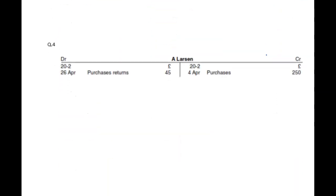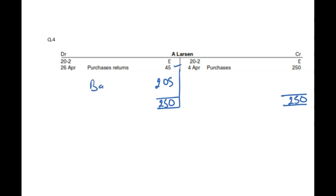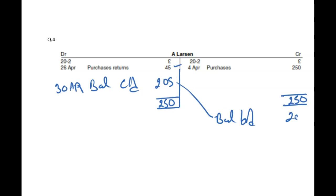The final one — A Larson. It looks like it's a trade payable account. We just want to do balance CD and BD and see which side is bigger. Clearly the credit side is bigger — 250. Writing the same total, 250. Take away 45 — how much is remaining? 205. That is your balance CD for the last date of the month, 30th of April. That becomes your balance BD, 205, on the other side — 1st of May. Balance CD and BD can be on either side — no problem at all. If it is a debit account, the BD should be on the debit side. If it is a credit account, it should be on the credit side. That's the concept.